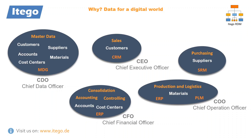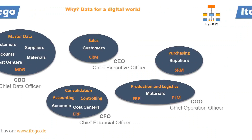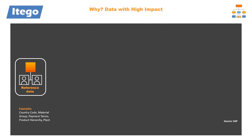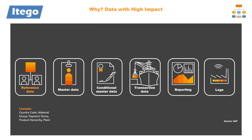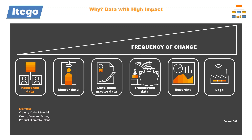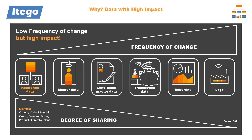It is also important to realize how the high impact of reference data is based on the high degree of sharing. For business processes, different data types are used, with reference data being the most fundamental. Other data types are, for example, master data, conditional master data, transaction data, reports and eventually logs. As we can see, the frequency of change of these data types increases from left to right, meaning that reference data is rarely altered. But if we now take a look at the degree of sharing, we can see that reference data has by far the highest degree of sharing.